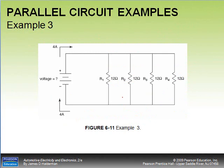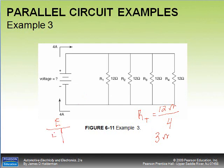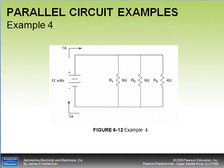The next example is simpler: all branches are the same value. Using the equal-branch formula: value of one branch divided by number of branches = 12 divided by 4 = 3 ohms total resistance. With 4 total amps and 3 ohms: voltage equals 4 × 3 = 12 volts.